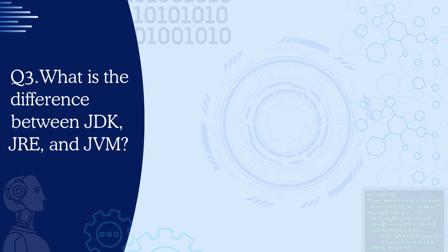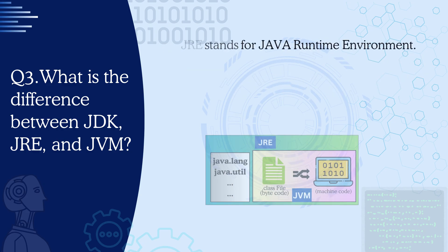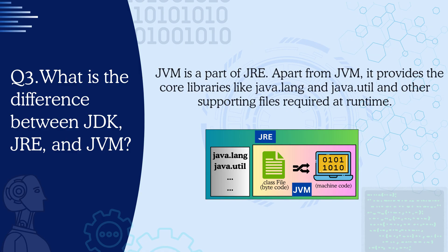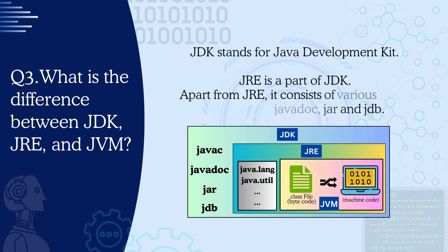Question 3: What is the difference between JDK, JRE, and JVM? JVM stands for Java Virtual Machine. Its responsibility is to run the program by executing the .class files, converting them into machine code that the CPU understands. JRE stands for Java Runtime Environment. JVM is a part of JRE. Apart from JVM, it provides core libraries like java.lang and java.util and other supporting files required at runtime. In short, it provides the whole environment needed to run programs.